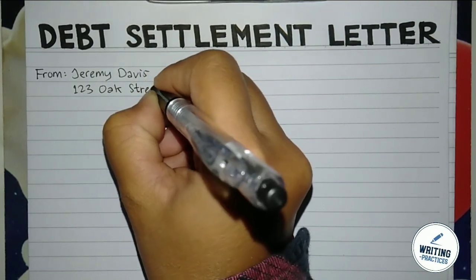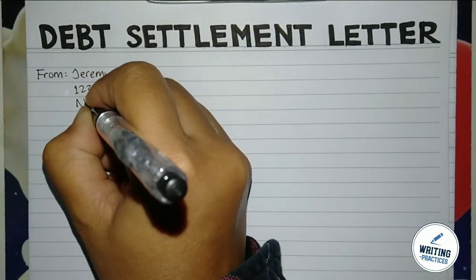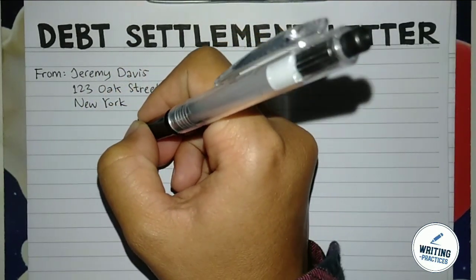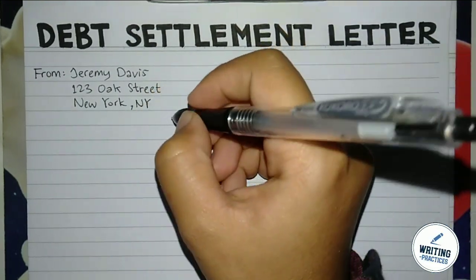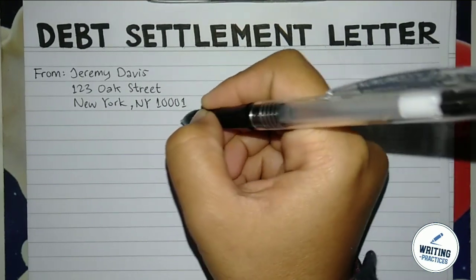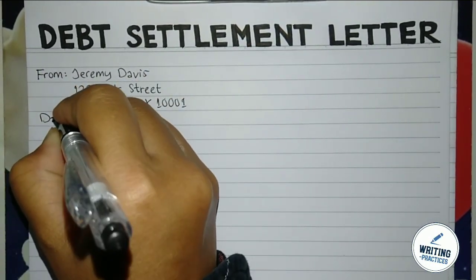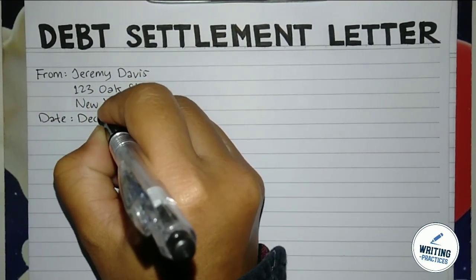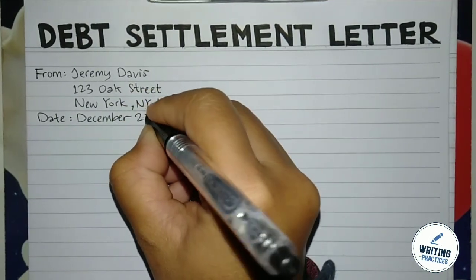The settlement is often made in a lump sum or through a structured payment plan. The creditor may accept or negotiate the offer, and if an agreement is reached, the terms are documented in the debt settlement letter. Once both parties agree, the debtor makes the agreed upon payment and the creditor considers the debt settled, often forgiving the remaining balance. Debt settlement letters are a common tool for resolving outstanding debts while avoiding bankruptcy.